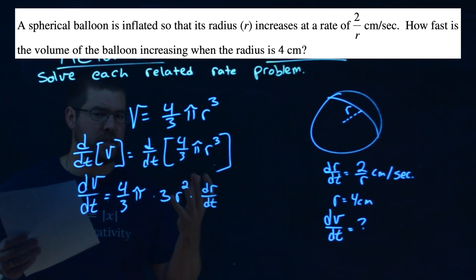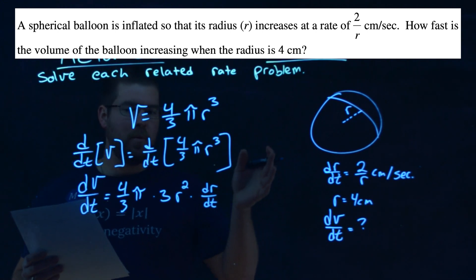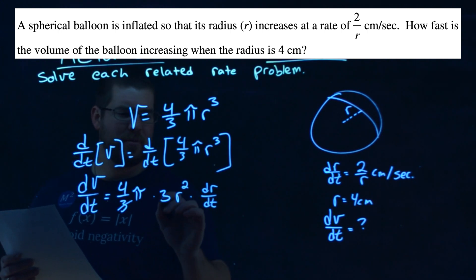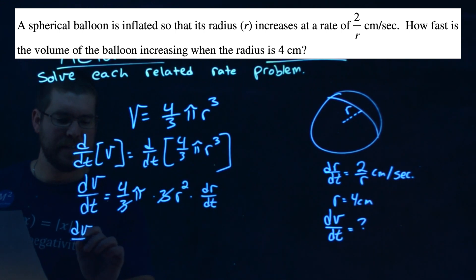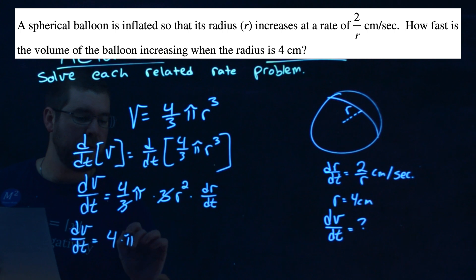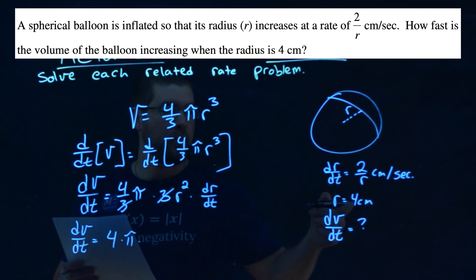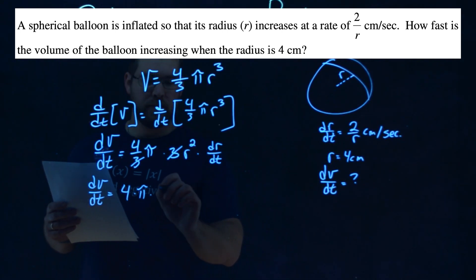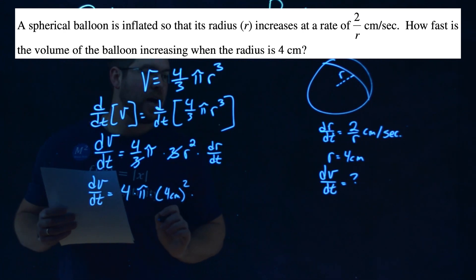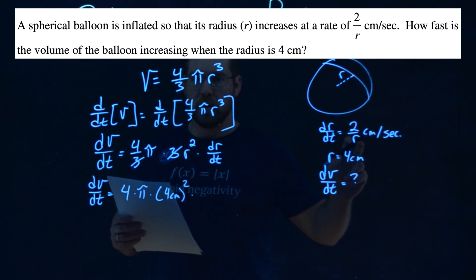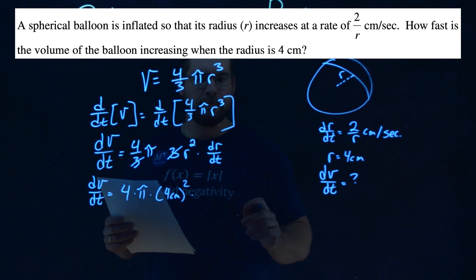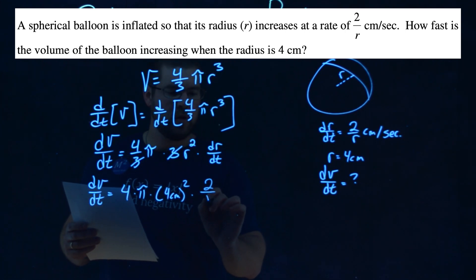And so now we have pretty much the meat here, let's go plug in what we know and simplify where we can. 3 and 3 cancels, that's always easy to get out of the way. So dv dt is equal to 4 times pi times our r value at this moment, which was 4 centimeters, so 4 centimeters squared times, now notice here, our dr dt is 2 over r centimeters per second. So we have that put in here, 2 over r centimeters per second.